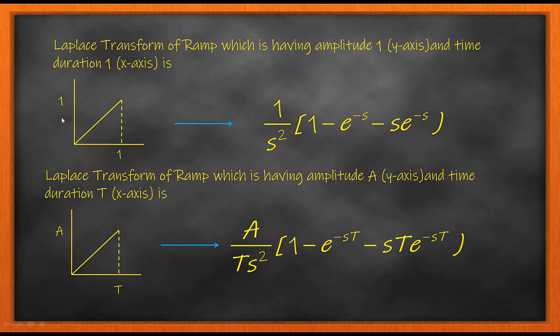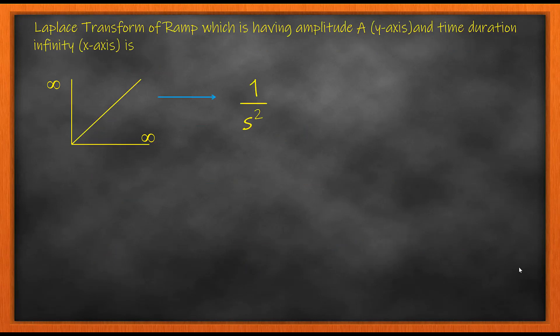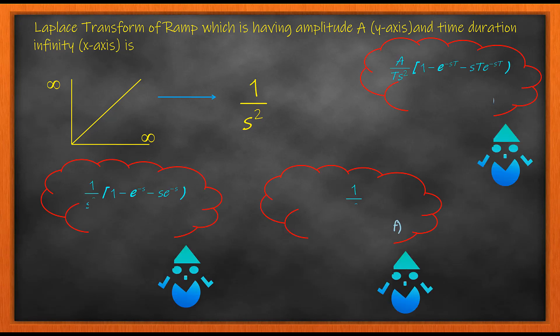When the amplitude becomes 1 and the time duration becomes 1 as in the given question, we have a substituted formula where A = 1 and T = 1. The third form of a ramp variation is when your ramp signal extends towards infinity. In that case the Laplace transform is simply 1/s². These are the three variants of ramp equations that a student needs to know going into the Gate exam.